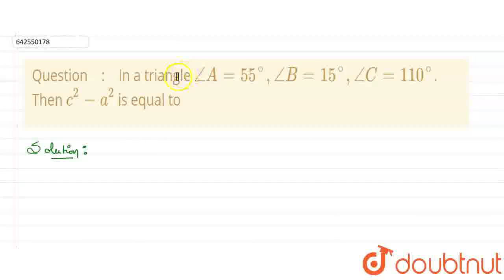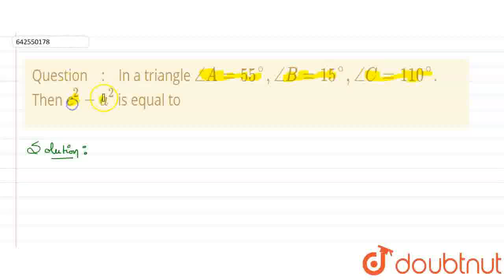Hello everyone. In this question it is given that in a triangle, angle A is 55 degrees, angle B is equal to 15 degrees, and angle C is equal to 110 degrees. Then we need to find the value of C squared minus A squared.